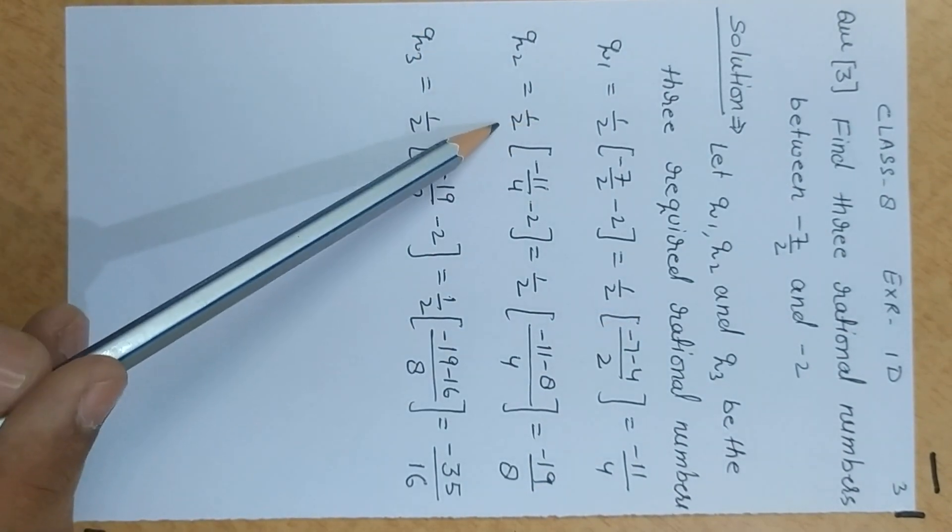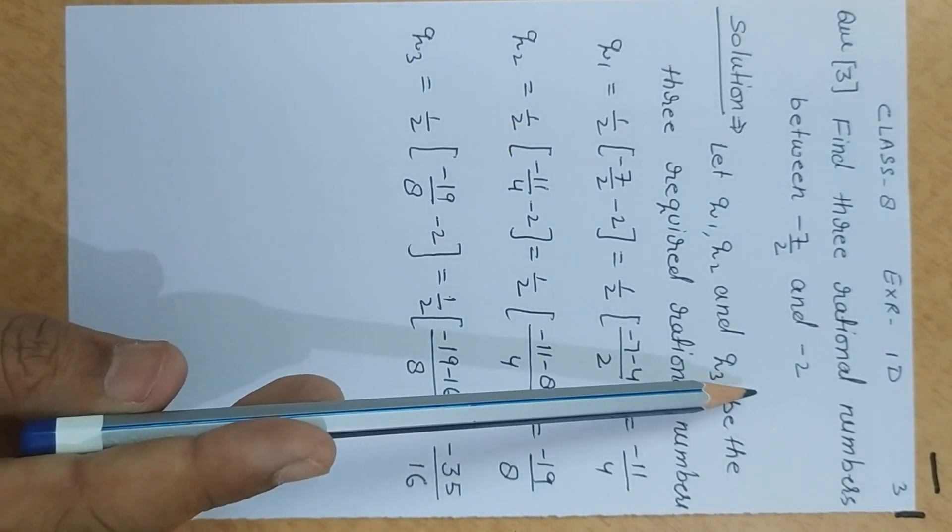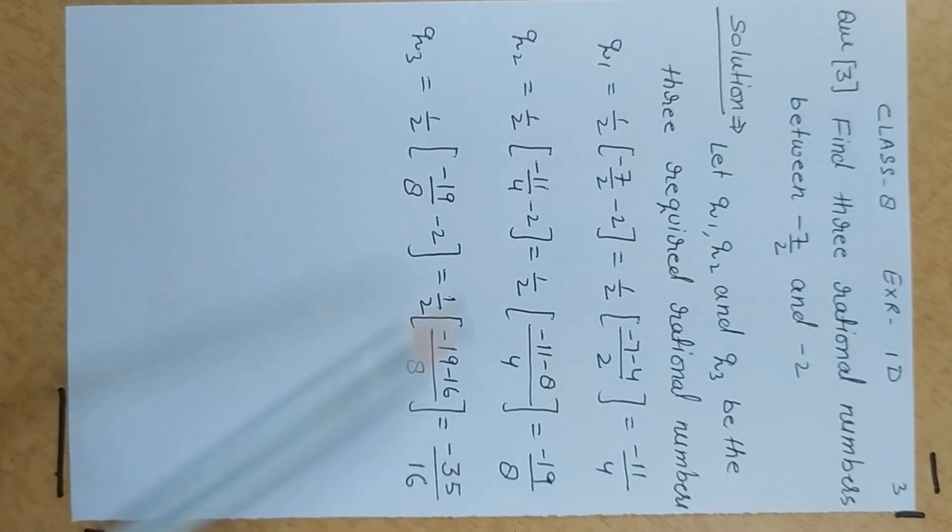We can take minus 2. 1 upon 2 times minus 11 by 4 and minus 2. Then, simplify it to get q3.